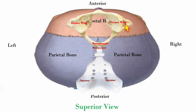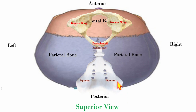Remember, your second digit or index finger is going to be on the greater wings, and your fifth digit or your pinky finger is going to follow the occipital squama. Wherever the basi sphenoid goes, that's the direction that the sphenoid is moving.